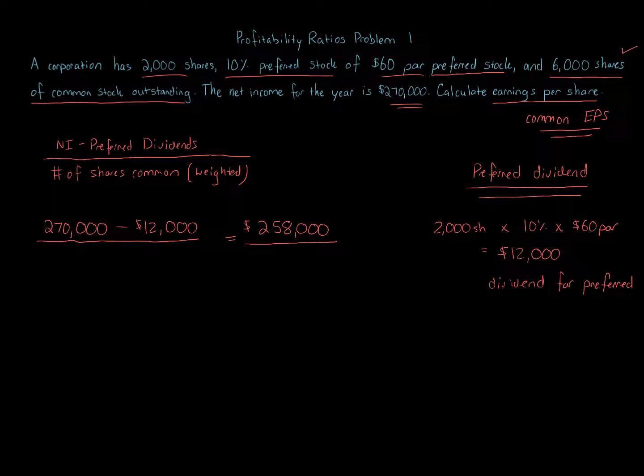When it comes to these calculations, you always use outstanding shares. If I gave you authorized and issued, ignore it. It's always going to be outstanding. So 6,000 shares of common stock. When we calculate this, we get $43 per share. And that is the earnings per share. It's $43 per share. That's how we calculate this.